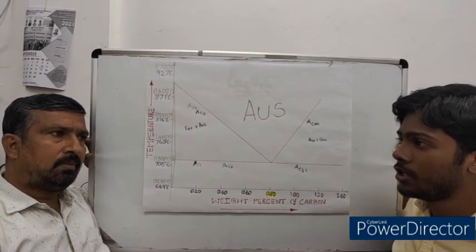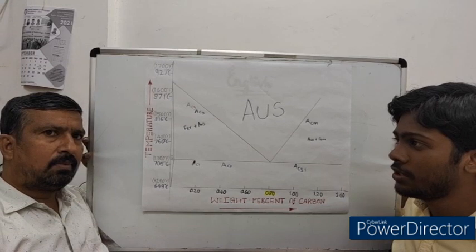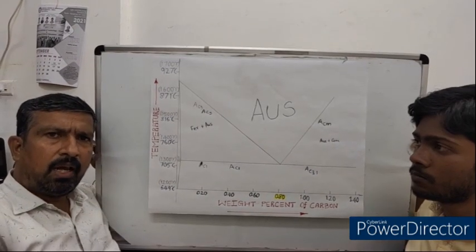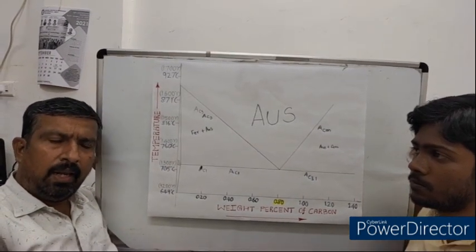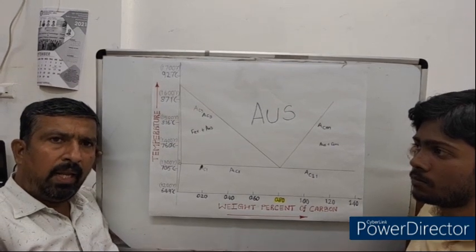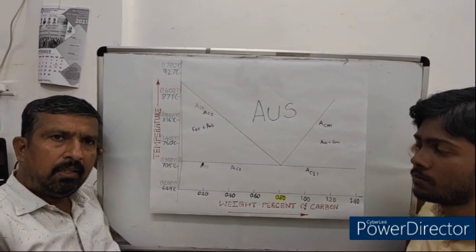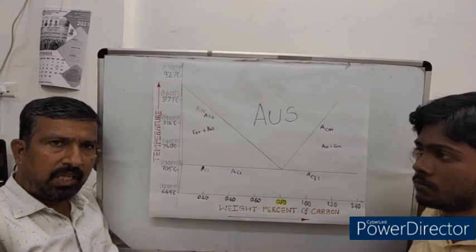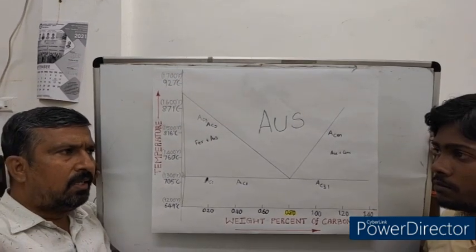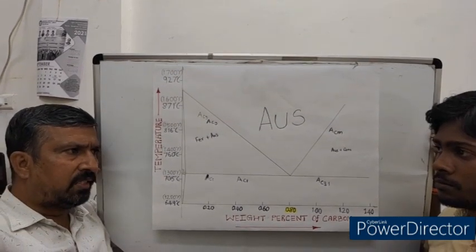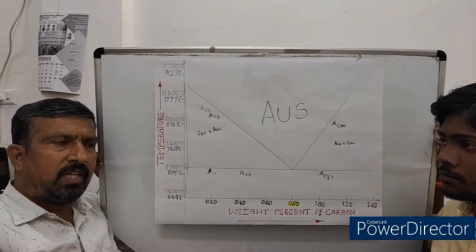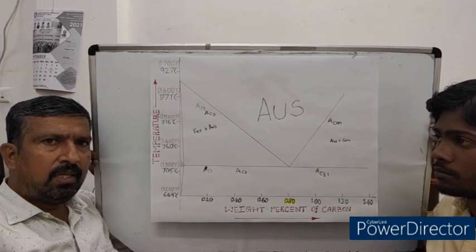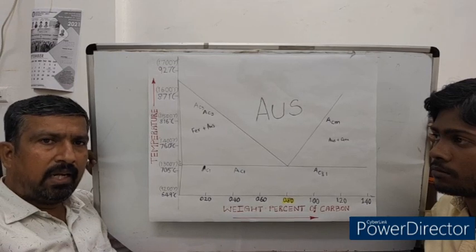Sir, what is critical temperature in heat treatment of steels? There will be some structure at room temperature. In heat treatments, during heating, that structure is transformed into austenite. That is the critical action. The temperature at which that critical action takes place is the critical temperature.